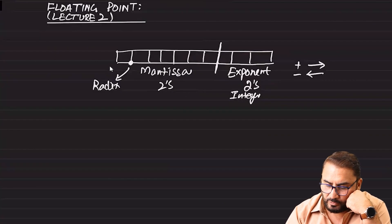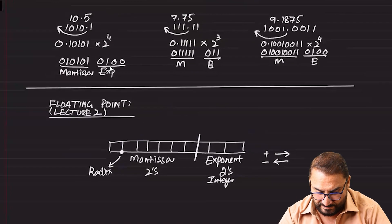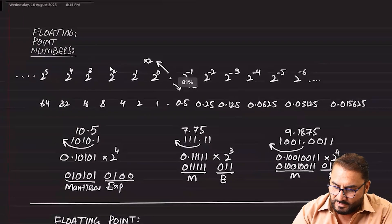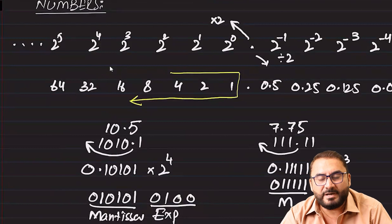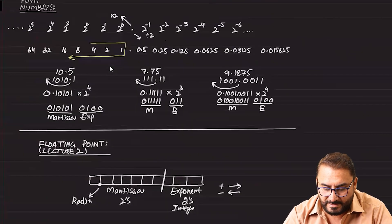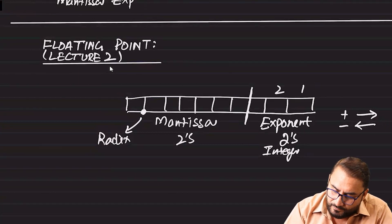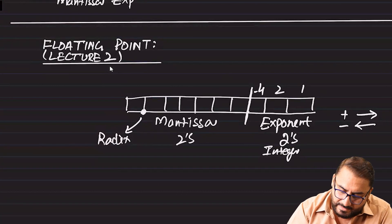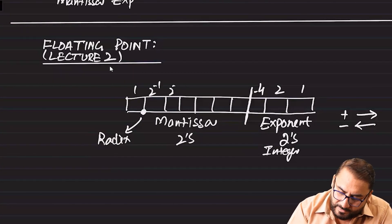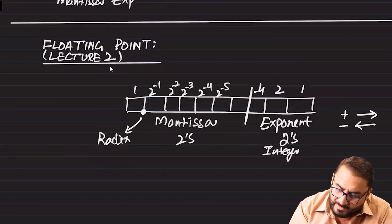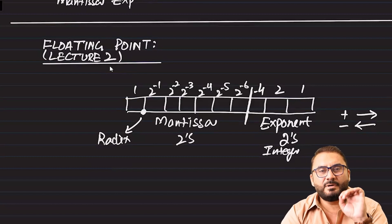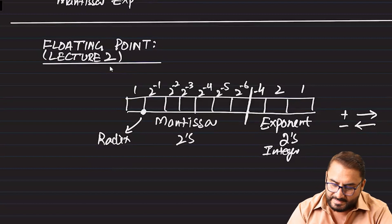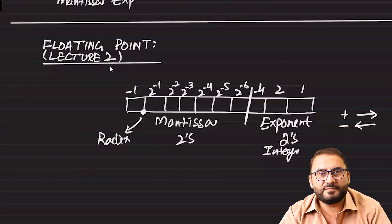Exponent is an integer — there is no fraction side in it. When exponent grows, it grows towards the left, and there is no point in it because it is an integer. So exponent is 1, 2, 4, and since it is two's complement, it can be negative 4. Mantissa bits go: 2 to the power minus 1, minus 2, minus 3, minus 4, minus 5, minus 6, or in decimals: 0.5, 0.25, 0.125, 0.0625, 0.03125, 0.015625. Remember to the fifth decimal place on the right.